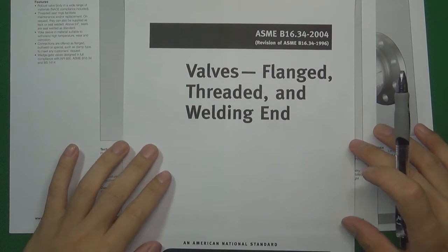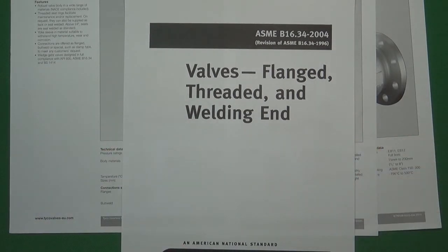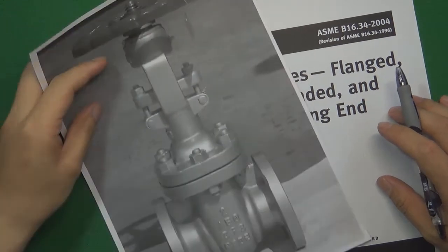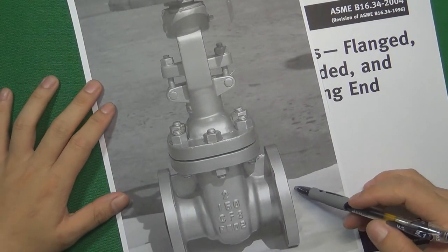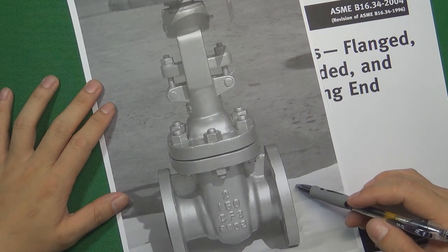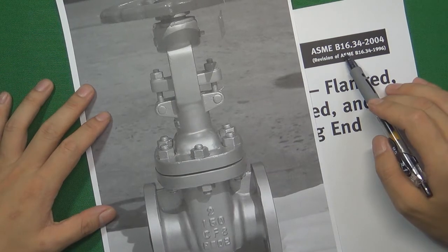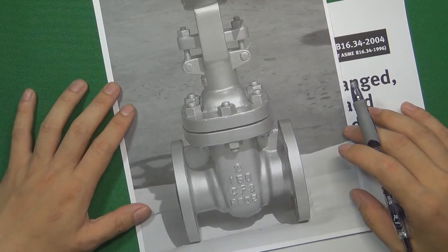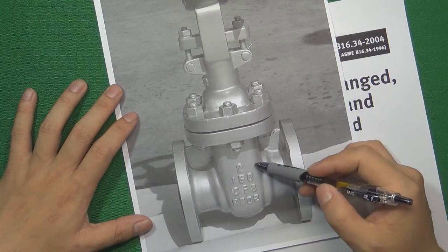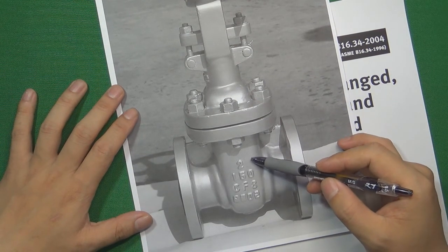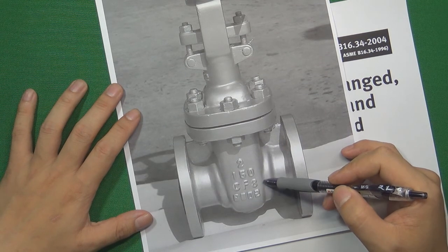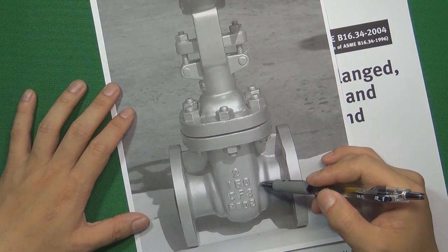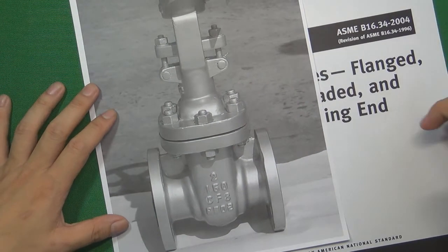Today we are going to talk about something in this standard. For example, if you are going to design a gate valve like this one — a very common gate valve widely used in manufacturing, like chemical plants or power plants. If you use ASME B16.34 to design this kind of gate valve, there are three basic factors to consider: size, pressure, and material. These factors are actually cast on the valve body.